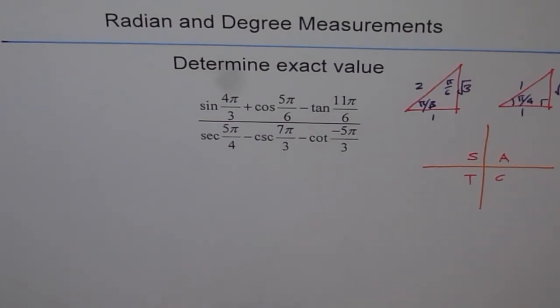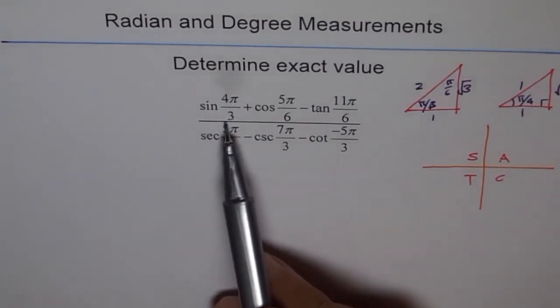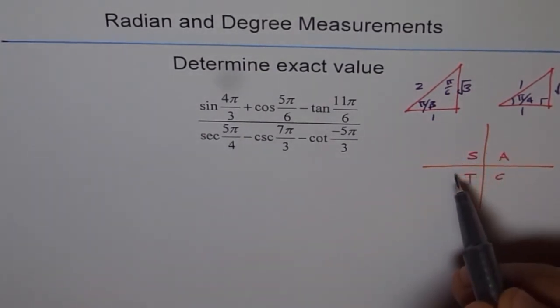Use the CAST rule and write these in terms of their related acute angle. So sin 4π/3, so π/3 is here, the 4th one comes here, and the related acute angle is π/3, do you see that.